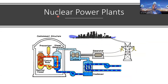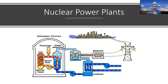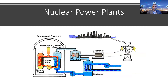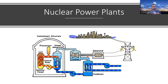A nuclear power plant is almost identical in structure. The only difference is that instead of a boiler, there is a nuclear reactor that boils the water and creates steam. From that point the process is the same: steam drives a turbine, the turbine shaft connects to the generator shaft, the rotor rotates, and electricity is generated and sent to customers.